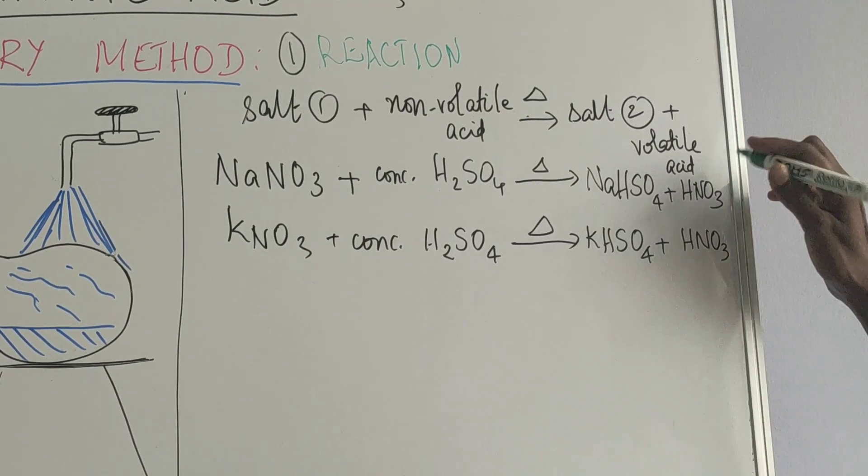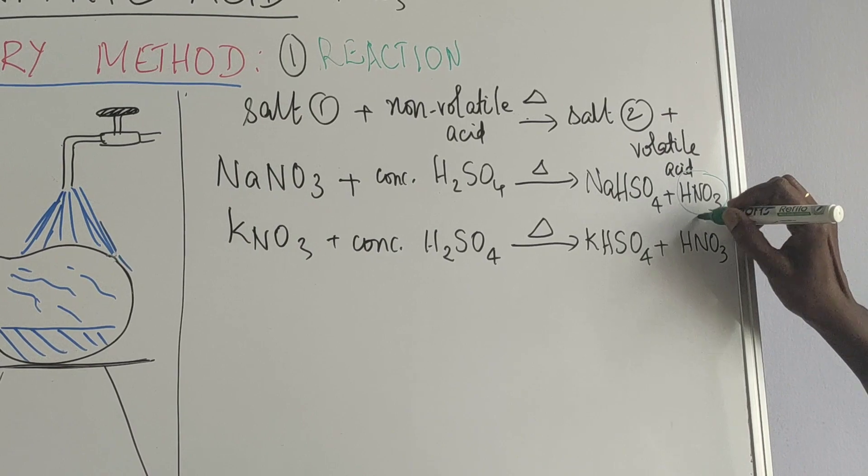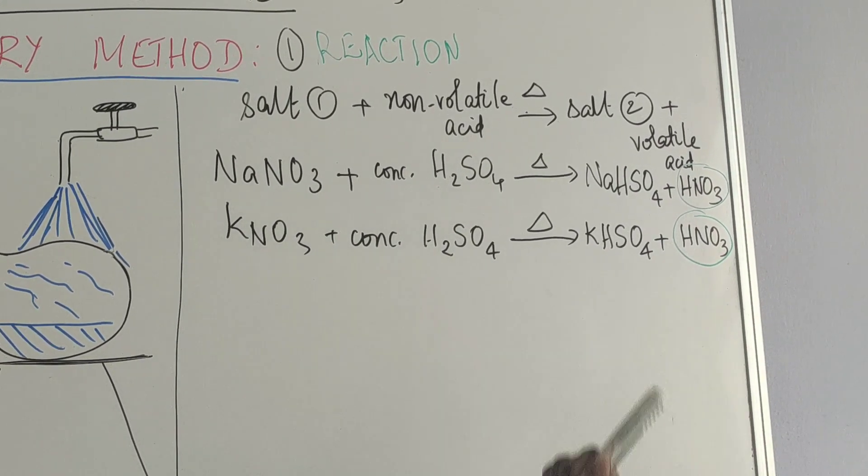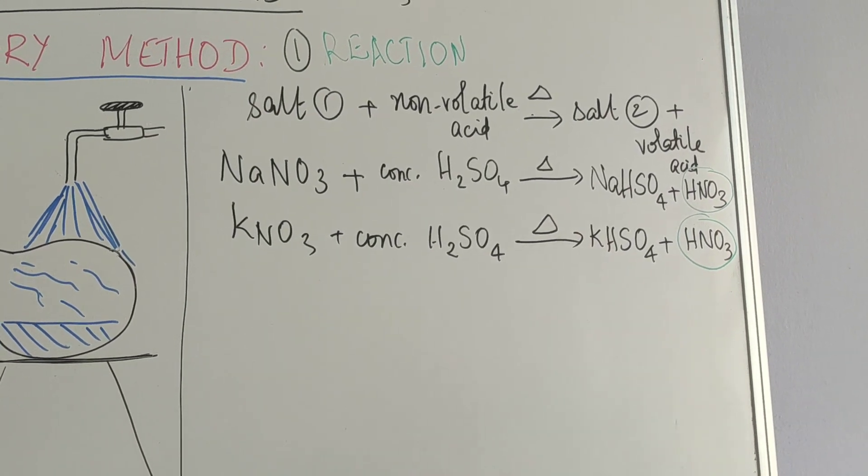bisulphate plus nitric acid. So here also nitric acid is formed. Here also nitric acid is formed using either of these two salts. Now that is the reaction that is happening.